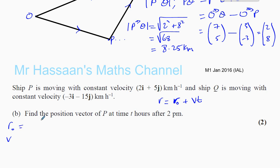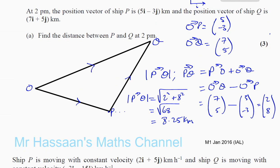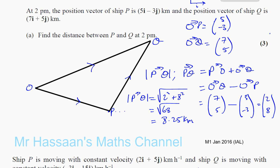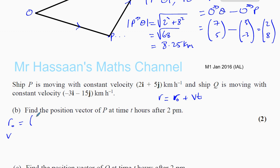r0 is its initial position, which was told to us in the question. It told us the initial position vector is 5i minus 3j, which I'll write as a column vector, 5 and minus 3. And its velocity for P is 2i plus 5j, which is 2 and 5. So we can say that the position vector of P is equal to its initial position, which is 5 minus 3, plus t times its velocity, which is 2, 5.